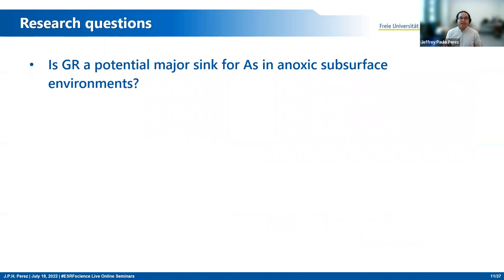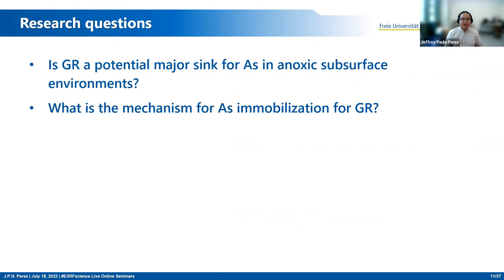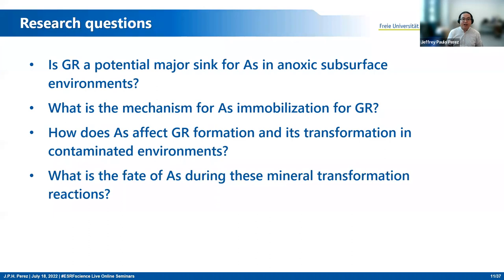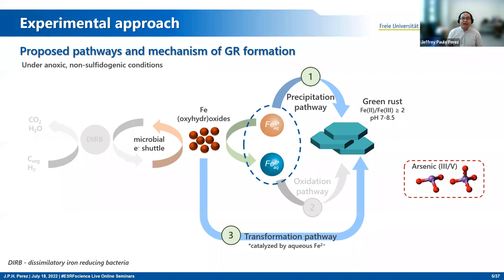So what are the research questions? Is green rust a potential sink for arsenic in subsurface environments? And if it is, what is the mechanism for the immobilization of arsenic in green rust? How does it affect the formation of green rust and its transformation under these environments? And ultimately, what is the fate of arsenic during these mineral transformation reactions?